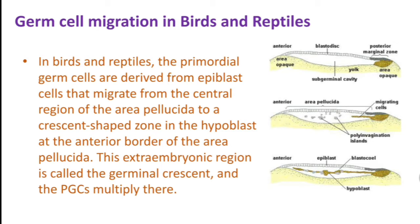Next is germ cell migration in birds and reptiles. In birds and reptiles, primordial germ cells are derived from epiblast cells. These cells migrate from the central region of the area pellucida to a crescent-shaped zone in the hypoblast at the anterior border of the area pellucida. This extra-embryonic region is called the germinal crescent, where PGCs multiply.